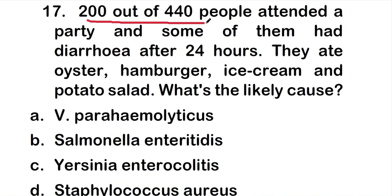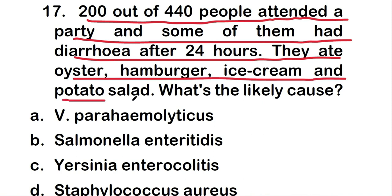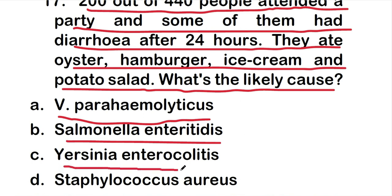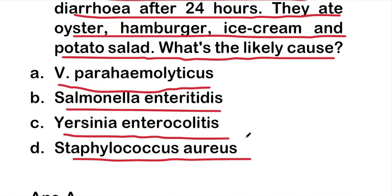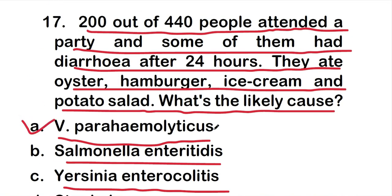Question 17: 200 out of 440 people attended a party and some had diarrhea after 24 hours. They ate oyster, hamburger, ice cream, and potato salad. What is the likely cause — Vibrio parahaemolyticus, Salmonella enteritidis, Yersinia enterocolitica, or Staphylococcus aureus? The right answer is option A: Vibrio parahaemolyticus.